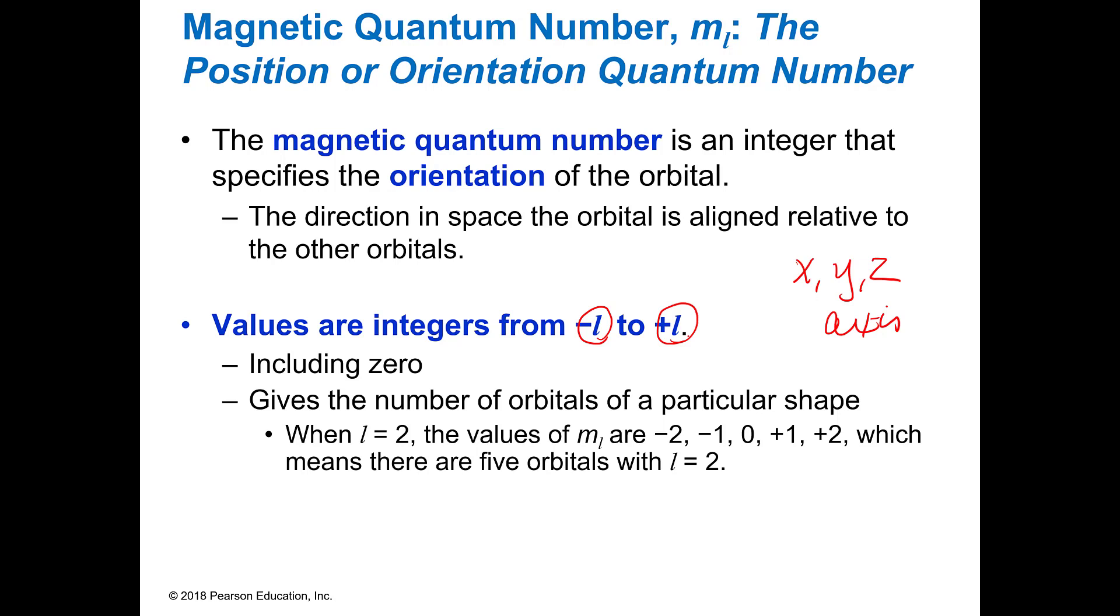So if you're a D orbital, that means that L equals 2. And so your numbers could be minus 2, minus 1, 0, plus 1, or plus 2. When you look at that, you're looking at those five orbitals, and you're seeing which orientation it's in. And remember, you can have two electrons in each one of those lobes.